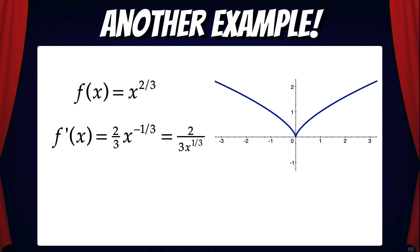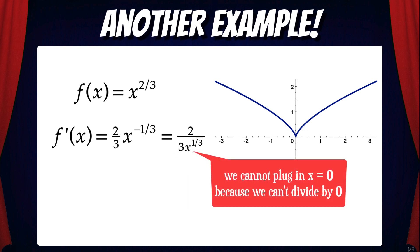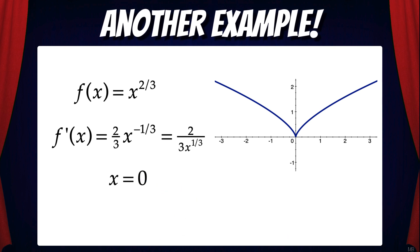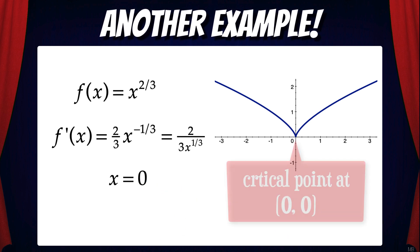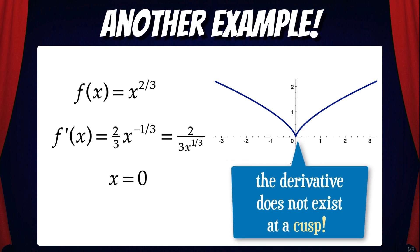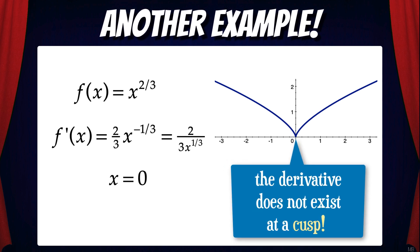But there is an x-value where the derivative does not exist. We cannot plug in x = 0 to the derivative because we would be dividing by zero. That means x = 0 is an x-value of a critical point. Plugging x = 0 back into the original function gives us zero, so f(x) has a critical point at (0, 0). As you can see from the graph, f(x) has a cusp at (0, 0), and the derivative of a function does not exist at a cusp.